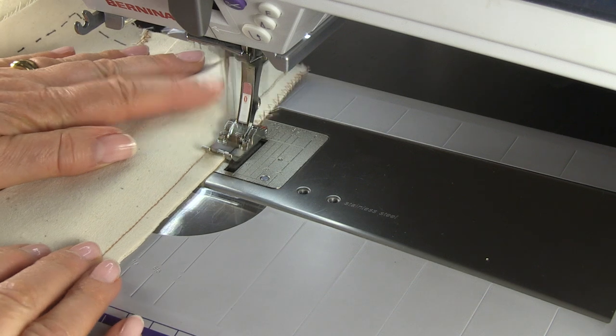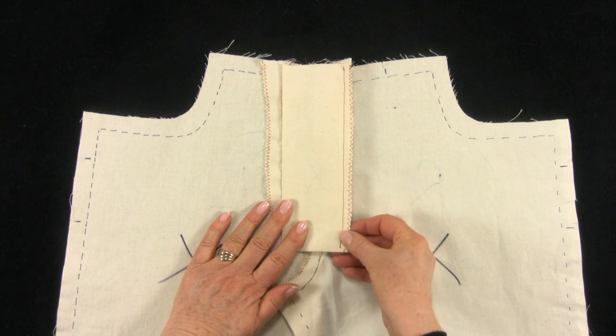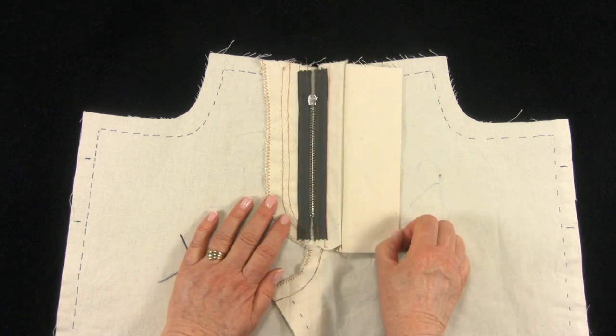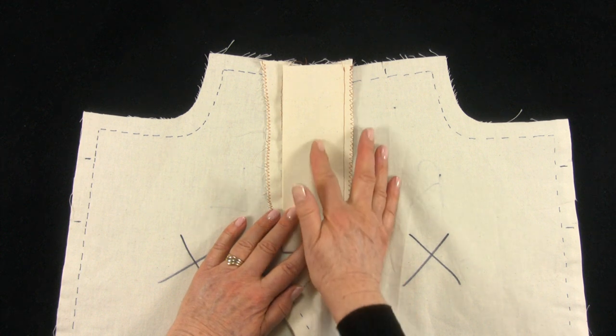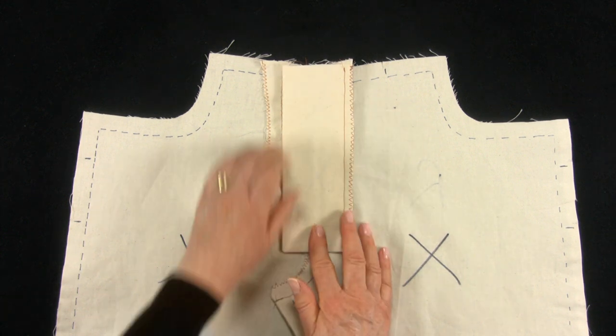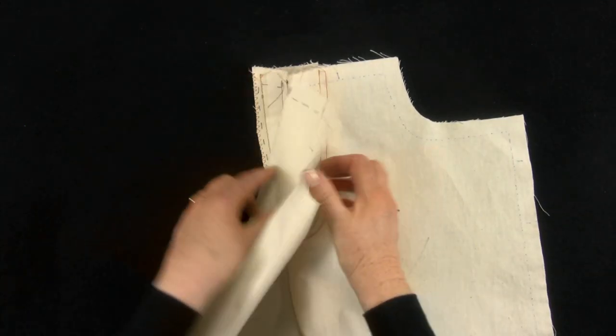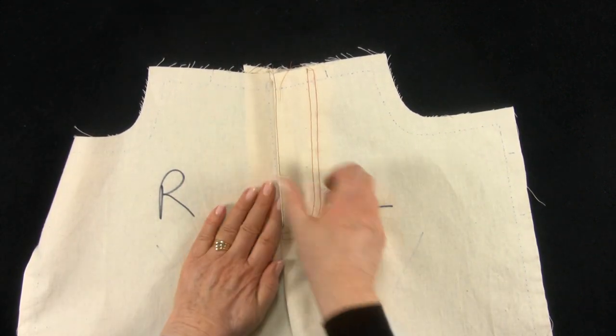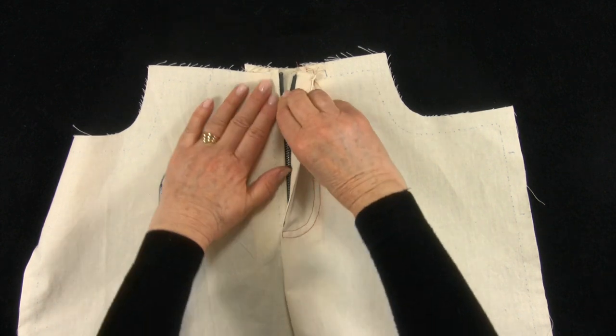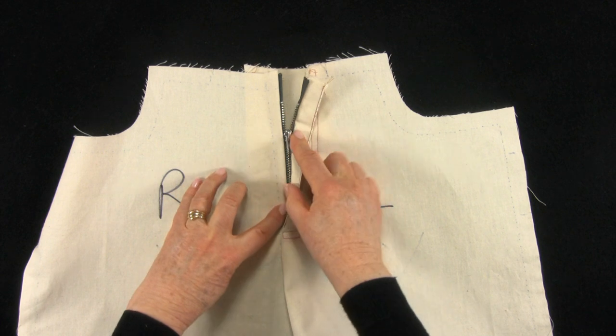Trim and neaten. With the zip guard in place, we will be securing it in a few other ways. Firstly, stitching it down here from the front. Make sure the zip guard is lying flat. Open the zip and stitch down the right front centre fold.